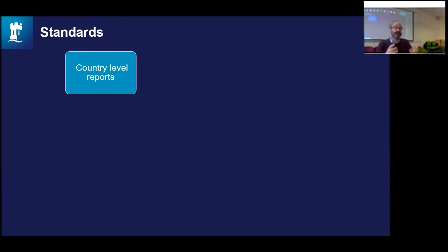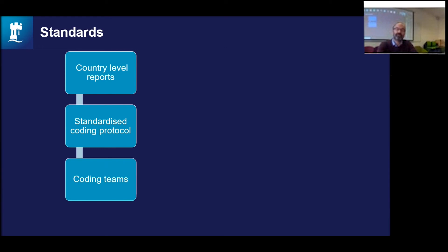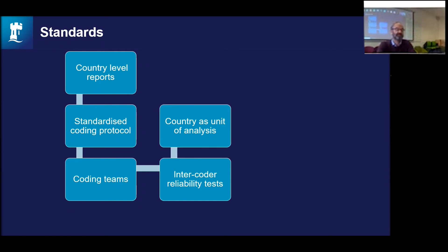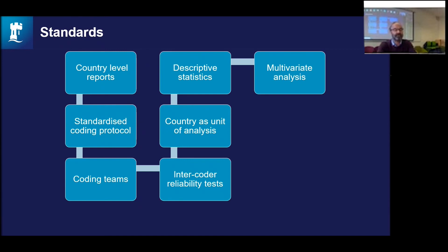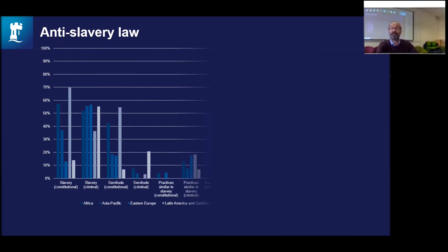The second approach uses standards. We have country-level reports, a standardized coding protocol that often draws on human rights legislation and frameworks, two independent coding teams, and the inter-rater reliability can be tested across those teams. Where the country is the unit of analysis, we can produce descriptive statistics, multivariate analysis, generalizations, and impact assessment. This is a really dominant form of measures being used in human rights work. We don't yet have standardized measures for modern slavery equivalent to the Political Terror Scale, Freedom House, or the Cingranelli-Richards datasets.